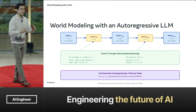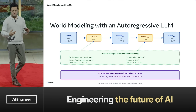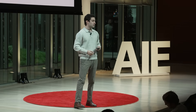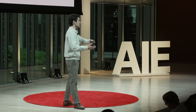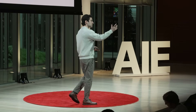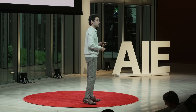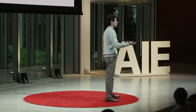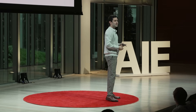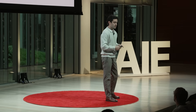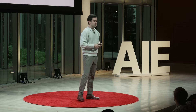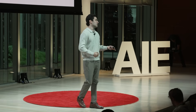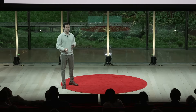Let's couple this with autoregressive large language models. We have a state of a program, an action — maybe the next line — then a new state, and another action, and so on. We can turn this with the execution tracing format into almost a chain of thought that a model can interpret. A model can learn to predict the next state of an execution trace. An LLM can autoregressively generate token by token the state-action-to-state function with program executions as the starting point.